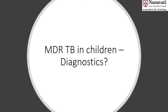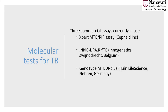In MDR-TB in children, a lot of new things are happening especially in diagnostics and in treatment. We will be covering what's new. In diagnostics, we have been using GeneXpert for a long time to pick up rifampicin resistance, but there are certain other tests now available — the line probe assay and MTB-DR plus — in which you can pick up additional drug resistance such as ethambutol, ofloxacin, and pyrazinamide.